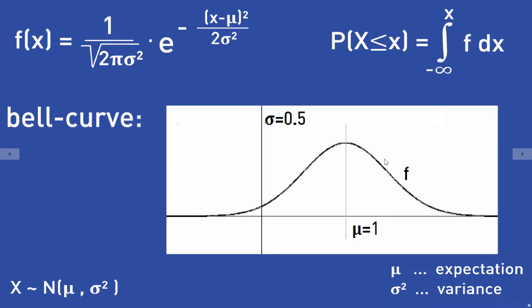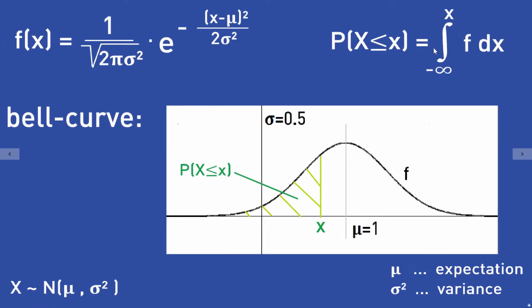For the probability, we now have to calculate an integral of this bell curve. The probability that x is smaller or equal to small x is this integral of this function. Which means that the probability is actually the area under the bell curve — because an integral calculates an area under a function, this probability is just the area under the bell curve where small x is here.